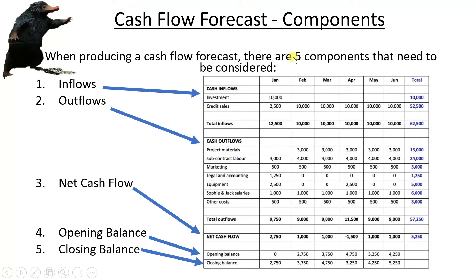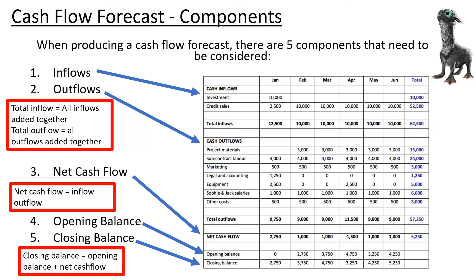When producing a cash flow forecast there are five components to consider: inflows, outflows, net cash flow, opening balance, and closing balance. Net cash flow is simply total inflows minus total outflows. Total inflows equals all the inflows added together; total outflows equals all the outflows added together. Closing balance comes from opening balance plus net cash flow.